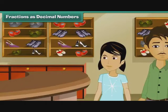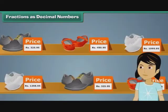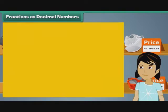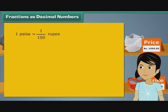Arpita went with her father to buy her school shoes. Prices of footwear in the store were expressed as decimal numbers. She wondered what the decimals in the prices meant. 100 paise make 1 rupee. In other words, 1 paise is 1 by 100th of a rupee. It can also be written as 0.01 rupee.